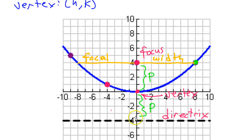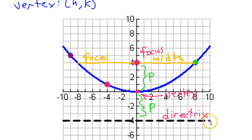First, we need to mention the vocabulary of parabolas. This point at the bottom of a parabola that's opening upward is called the vertex. There's also a point in the interior of the parabola called the focus. The distance from the vertex to the focus is called P. There's also a line in the opposite direction of the parabola — if the parabola is opening up, on the other side away from the focus is a line called the directrix. The directrix is also P away, so if the focus is P up, the directrix will be P down.